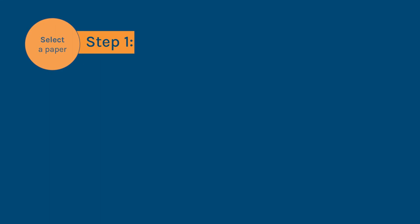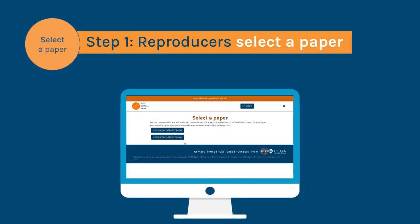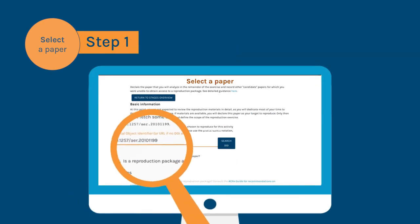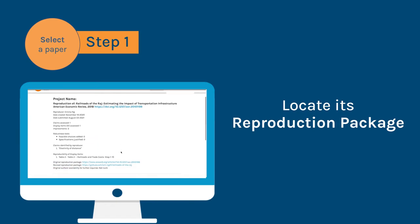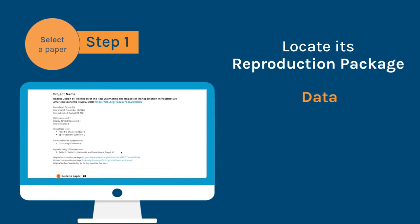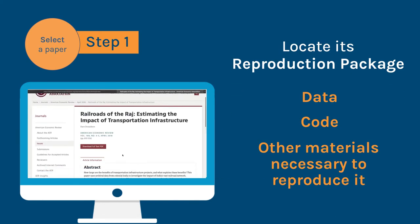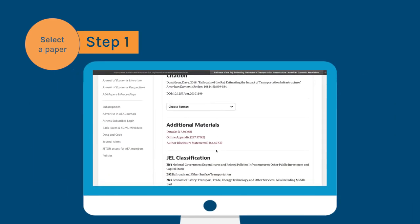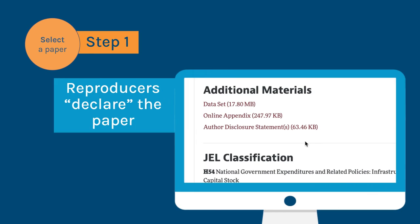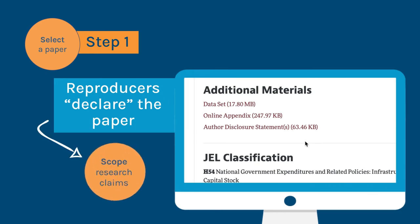First, reproducers select a paper, input its bibliographic information, and try to locate its reproduction package containing data, code, and other materials necessary to reproduce it. At this point, if they've managed to obtain at least some reproduction materials, reproducers declare the paper and move forward with analyzing it.